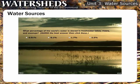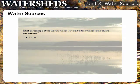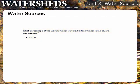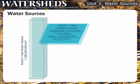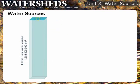What percentage of the world's water is stored in freshwater lakes, rivers, and swamps? The correct answer is that the amount of water contained in freshwater lakes, rivers, and swamps represents only one hundredth of one percent of the Earth's estimated 1,386,000,000 cubic kilometer total water volume.